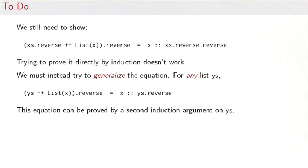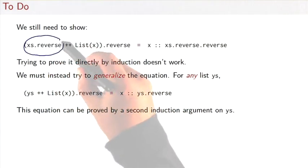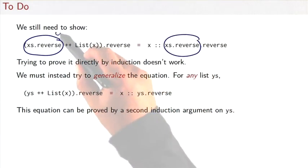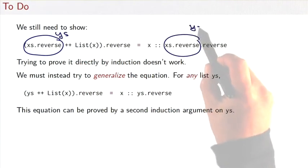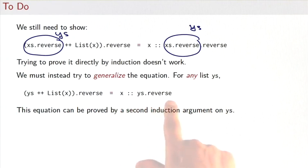What we can try instead is to generalize this equation. Instead of xs.reverse, we replace that with an arbitrary list ys. Our new lemma to prove is that for any list ys, (ys followed by x).reverse is the same as x followed by ys.reverse. To prove that, we use a second induction argument, this time on the list ys.